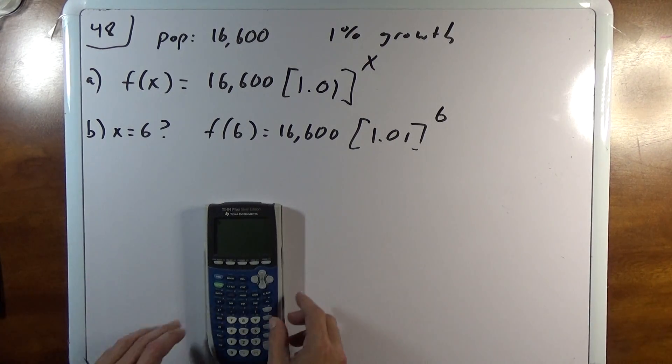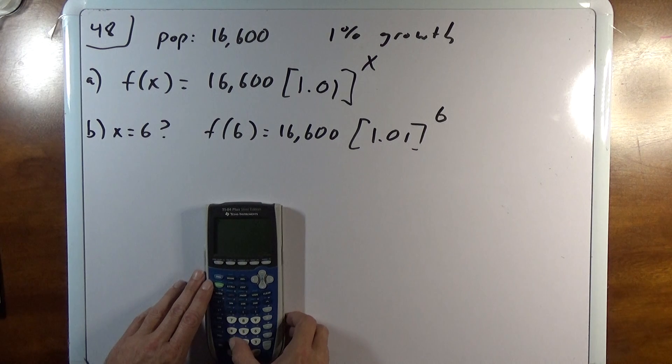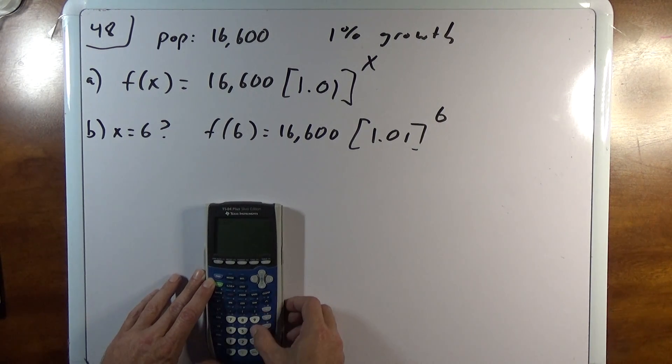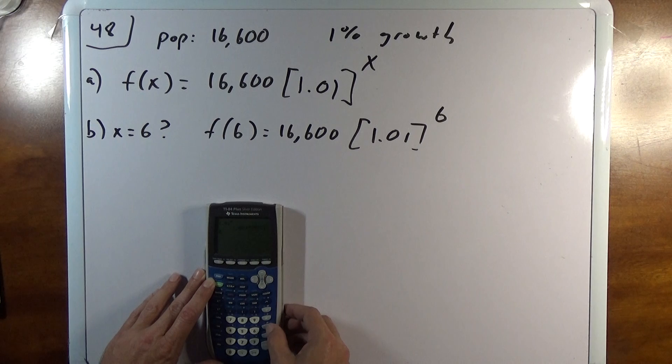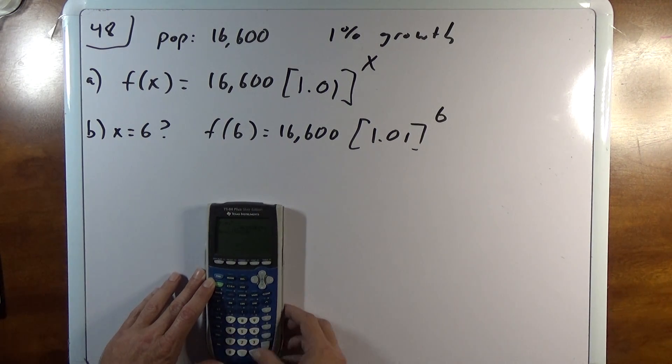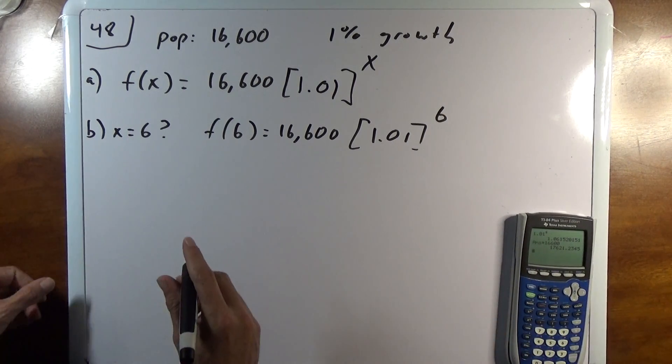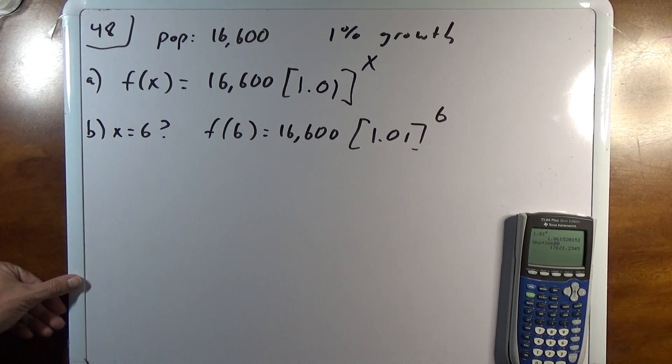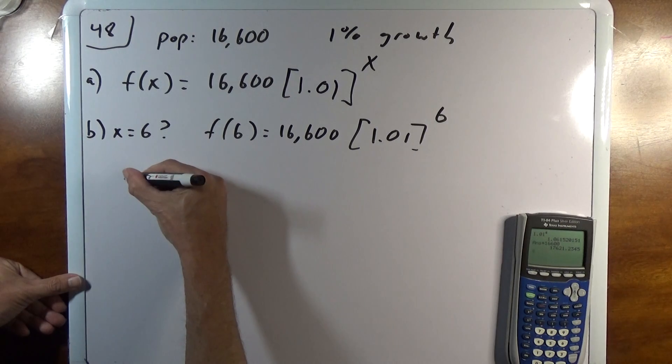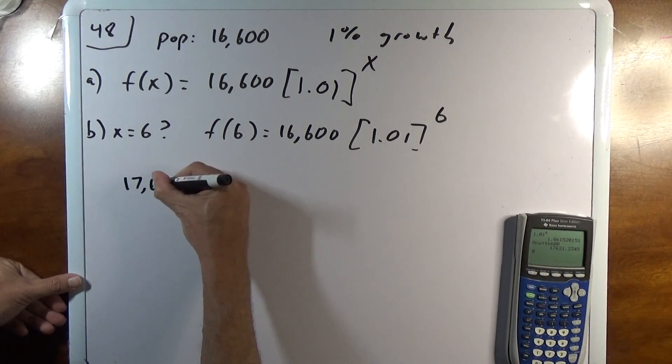So on a graphing calculator you can just do it left to right, but I'll do 1.01 power 6. 1.06 times 16,600. Now I'm going to truncate this, I'm going to round it down because you won't get fractions of individuals, right? So 17,621.